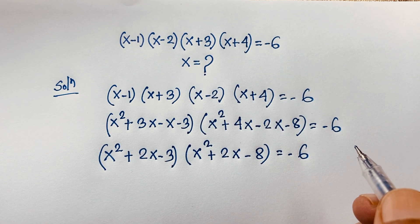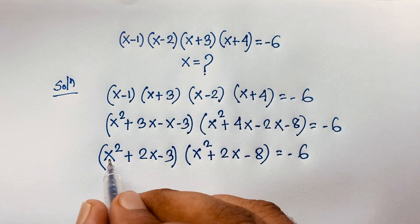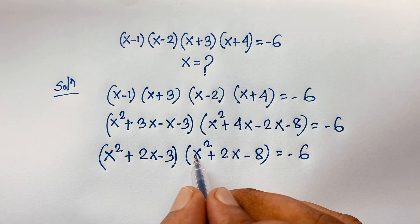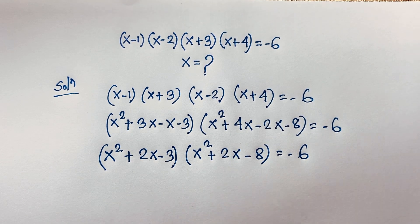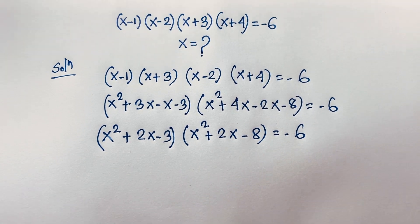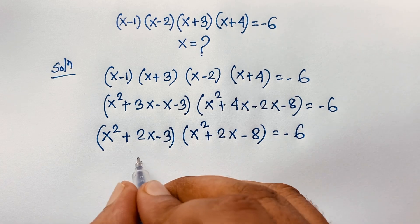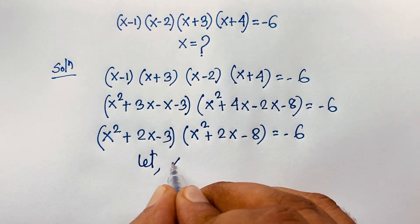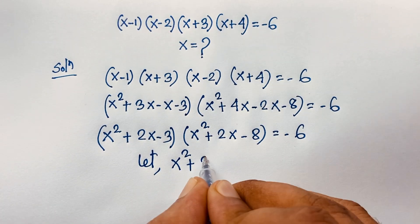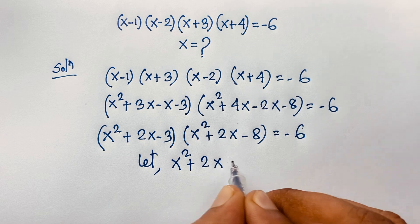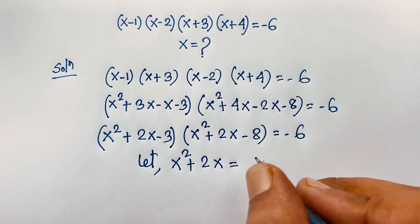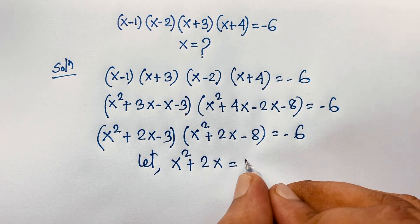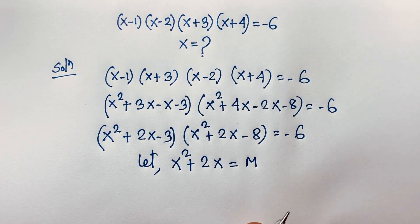Now you can see that (x squared plus 2x) appears in both brackets — they are the same. So let x squared plus 2x equal m.